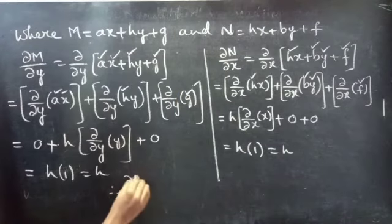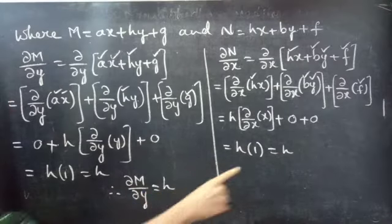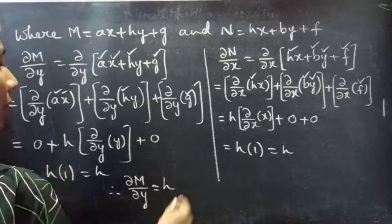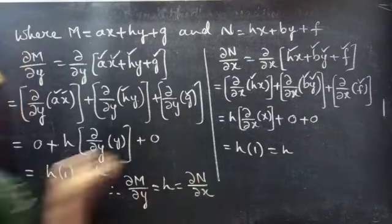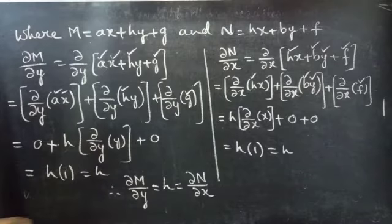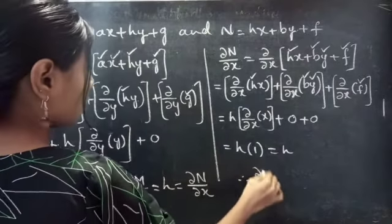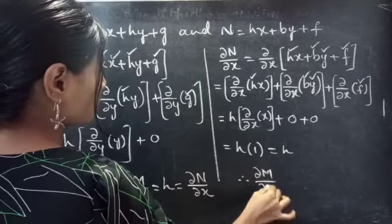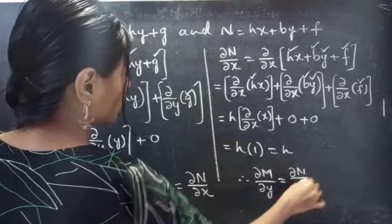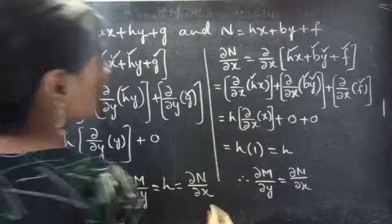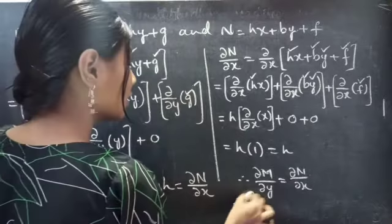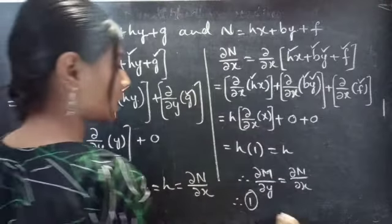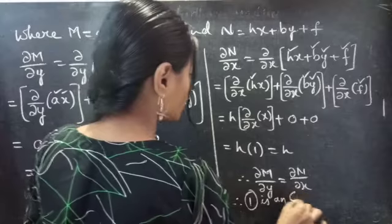Therefore, partial derivative of M with respect to y equals h, and partial derivative of N with respect to x also equals h. Since partial derivative of M with respect to y equals partial derivative of N with respect to x, we can say that the given differential equation (equation 1) is an exact equation.